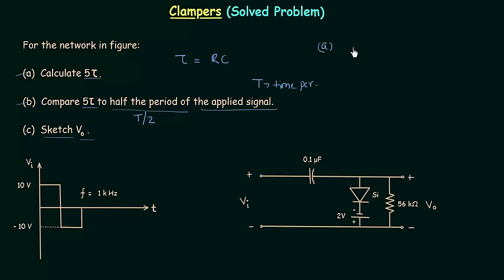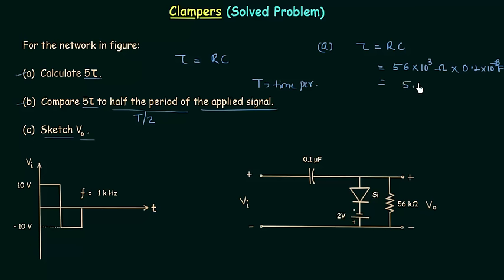I will calculate 5 tau. First, tau equals RC. R is equal to 56 kilo ohms, which is 56 multiplied by 10 raised to power 3 ohms. C is 0.1 microfarad. Solving this gives tau equal to 5.6 ms. Now, 5 tau is equal to 5 multiplied by 5.6 ms, which equals 28 ms. This is the answer to Part A.